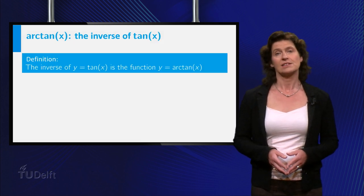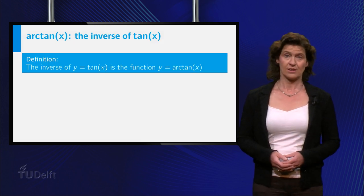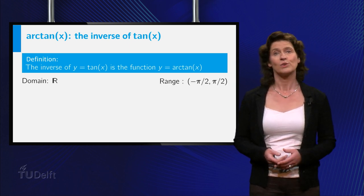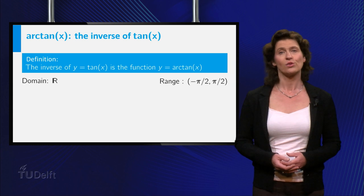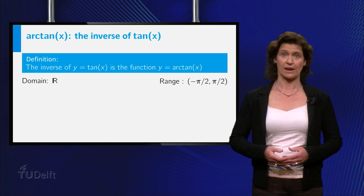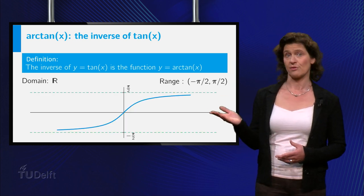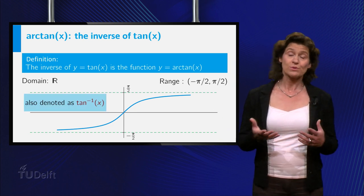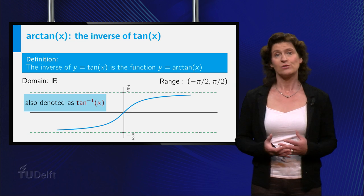The inverse of the tangent is called the arctangent. The domain of the arctangent is the real line. And the range of the function is the interval from minus pi over 2 to plus pi over 2. Here is its graph. Some books use the notation tangent superscript minus 1 for the inverse of the tangent.